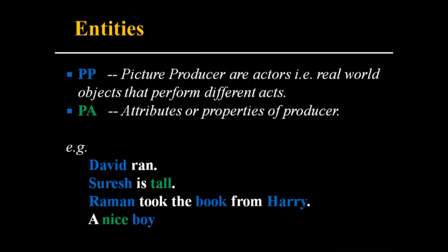Entities are the objects that are involved in the event. Entities are two types, picture producer and the picture adder, attribute of the picture producer. For example, David ran. David is performing this action. So that means David is the picture producer.